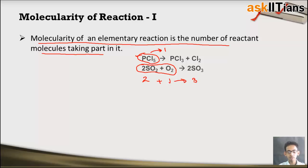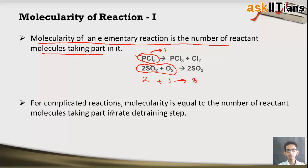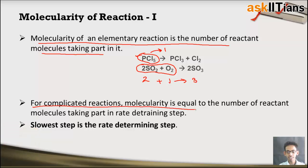For an elementary reaction, the molecularity is equal to the number of reactant molecules. While for a complicated reaction, molecularity is equal to the number of reactant molecules that take part in the rate-determining step. A complicated reaction completes in two or more steps, and out of those steps, the one which is slowest — the one with the minimum rate — is the rate-determining step. The number of molecules present in that particular step is the molecularity of the reaction.